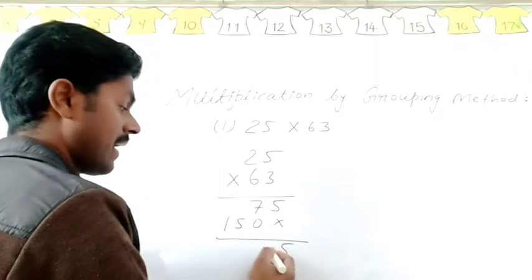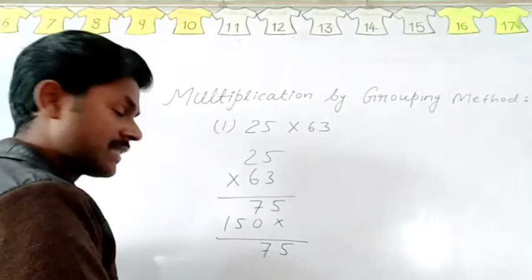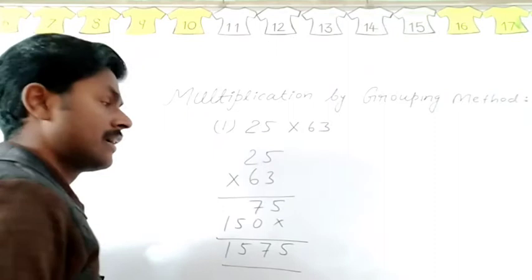Now we have to add. After adding, it will be 5. 7 and 0 will be 7. 5 and 1.